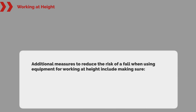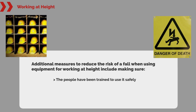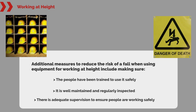Additional measures to reduce the risk of a fall when using equipment for working at height include making sure the people have been trained to use it safely, it is well maintained and regularly inspected, and there is adequate supervision to ensure people are working safely.